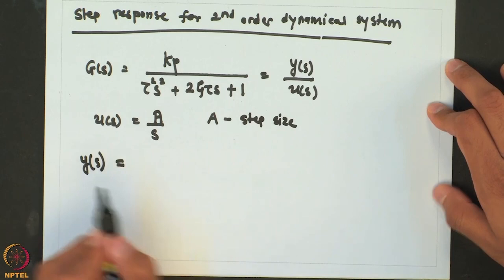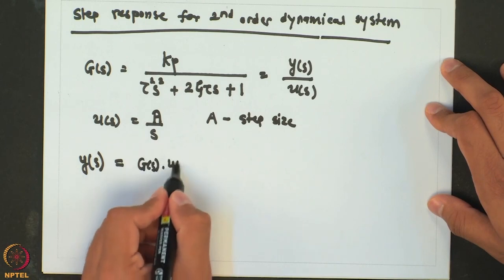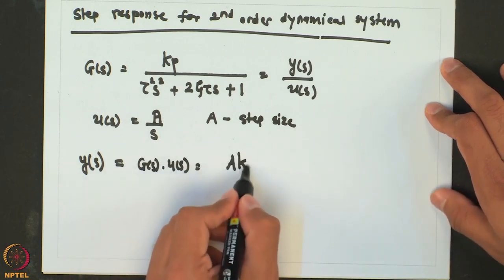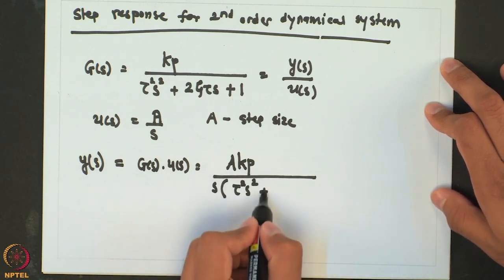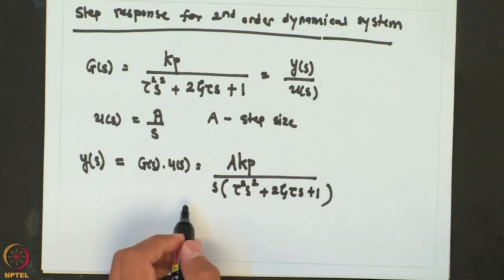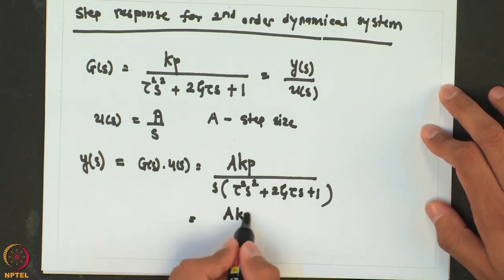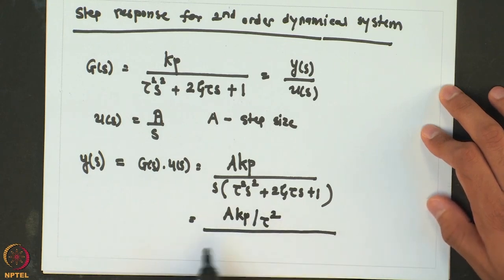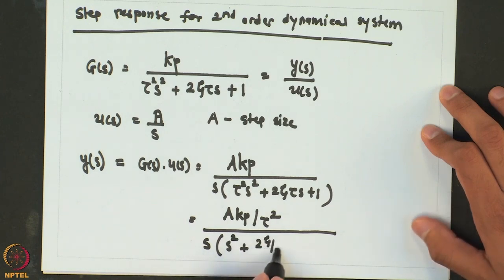So we can write that the Laplace of output Y is going to be G(S) times U(S), which will be AKP over S times (tau squared S squared plus twice zeta tau S plus 1). In order to factor this denominator, we also divide numerator and denominator by tau squared, giving AKP over tau squared divided by S times (S squared plus 2 zeta over tau times S plus 1 over tau squared).